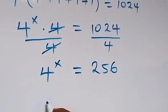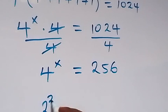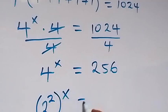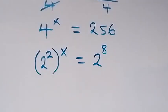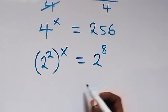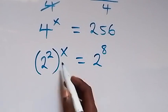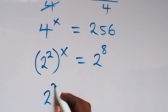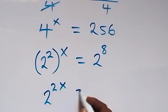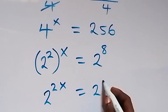Then here we can equally write 4 as 2 squared, raised to the power x, equals 256, which can also be written as 2 raised to the power 8 — that's 2 multiplied by itself 8 times. From the law of indices, this power multiplies and we have 2 raised to the power 2x, now equals 2 raised to the power 8.